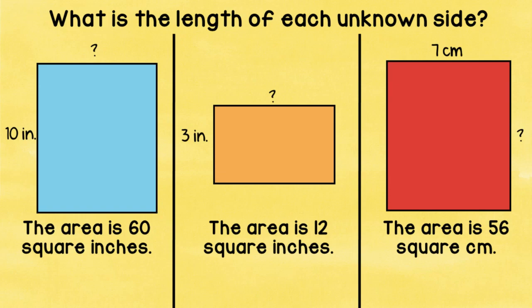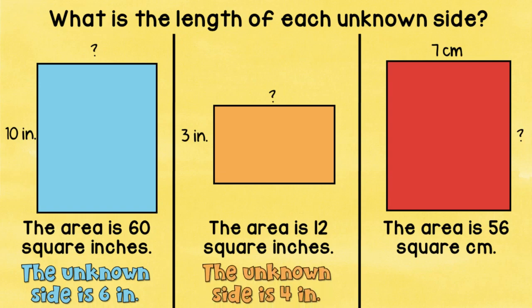Let's take a look at this next one with the blue rectangle. The area is 60. So 60 equals 10 times what? Well, 10 times 6 equals 60. So the unknown side is 6. With the orange, the area is 12 square inches. So 3 times what equals 12? Three times, you got it, four. Three times four. So the unknown side is 4 inches. And the last one is hard, but I bet you can do it. The area is 56 square centimeters. So 7 times what equals 56? If you said 8, you're right.